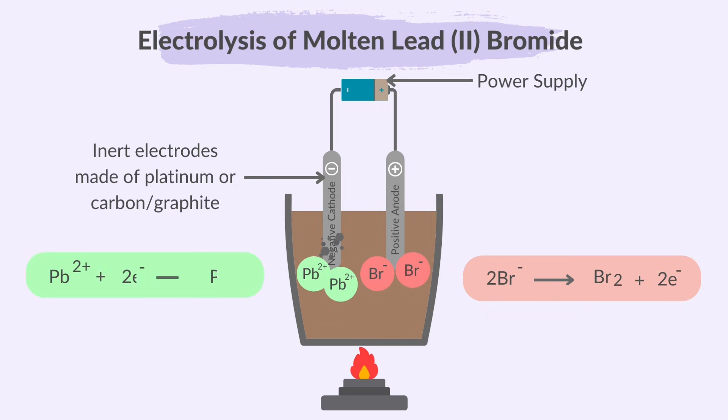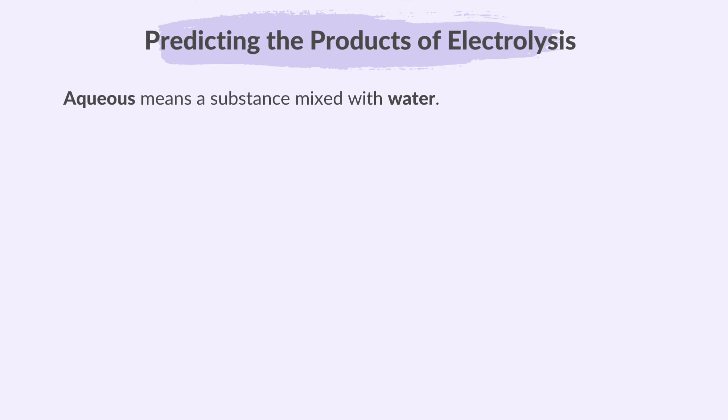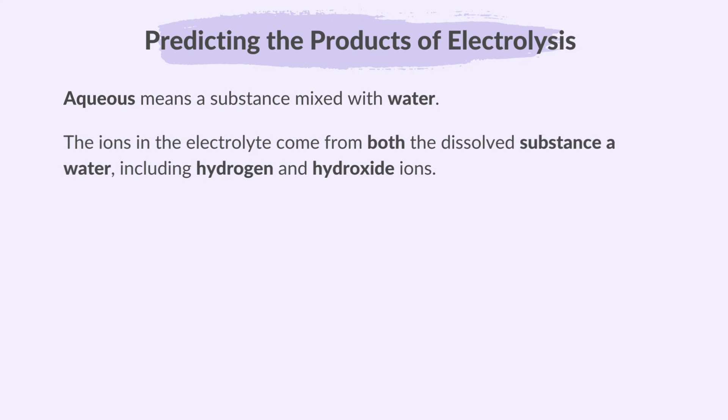Lead ions gain electrons at the cathode and become lead atoms. In the case of electrolysis of an aqueous solution, remember that aqueous means a substance mixed with water. So the ions in the electrolyte come from both the dissolved substance and water, including hydrogen and hydroxide ions.